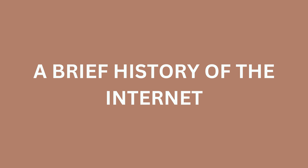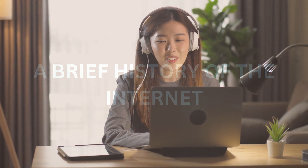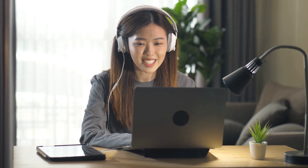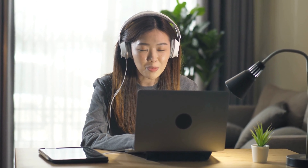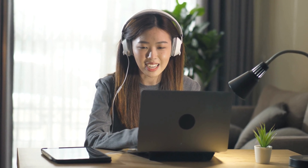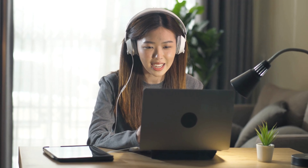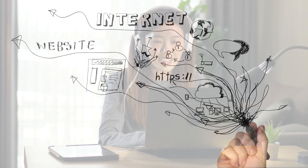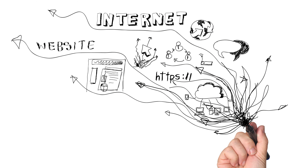A brief history of the internet. The internet's origins can be traced back to the 1960s when the US Department of Defense developed a system called ARPANET. This system was designed to enable researchers to share information and resources across a network of computers. Over time, ARPANET evolved into what we now know as the internet.